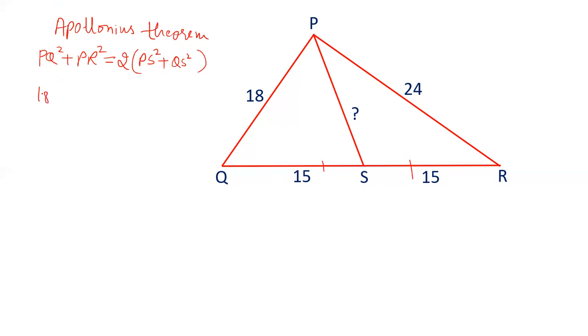Now, PQ is 18, PR is 24, twice PS we have to calculate. QS is 15 square. 18 square is 324, 24 square is 576, equals twice PS square plus 15 square is 225.